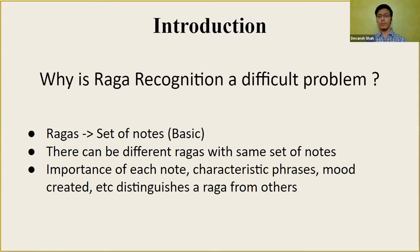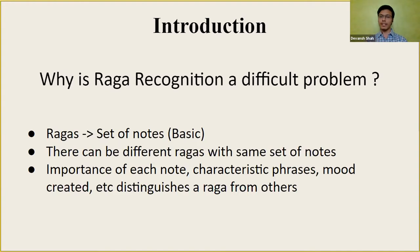So why is Raga recognition a difficult problem? If you are a beginner in Indian classical music, someone might tell you that a Raga is just a set of notes like a melody. But as you go deeper, you will see that there can be different Ragas with the same set of notes. What differentiates one Raga from another includes the importance given to each note, characteristic phrases, and the mood created — hundreds of very subtle characteristics, which is what makes Raga recognition a very difficult problem.